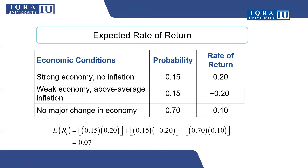On the other hand, if we take a situation in which we have three different economic conditions — the first where the economy is somehow strong, the second where the economy is somehow weak, and the last where there is no major change in the economy — the probabilities are not fixed. It depends purely on how you are determining these probabilities. If you think the strong economy might come on a higher side, you can change the probability from 0.7 to 0.2 and move to 0.7 for another scenario. These are the expected rates of return we might expect based on the future position of the economy. To get the expected rate of return, we take the probability multiplied by the expected return, and when you sum it, you get the expected or average rate of return.